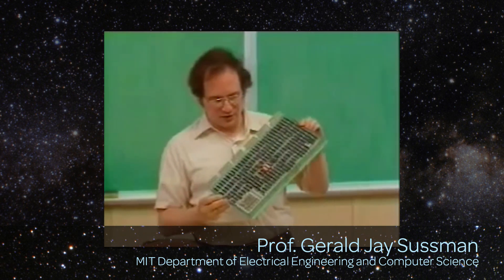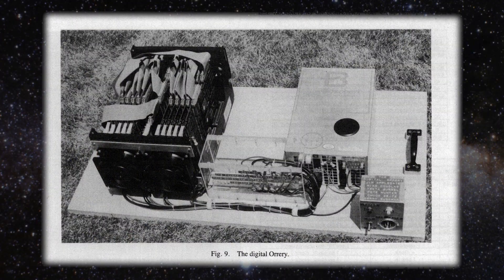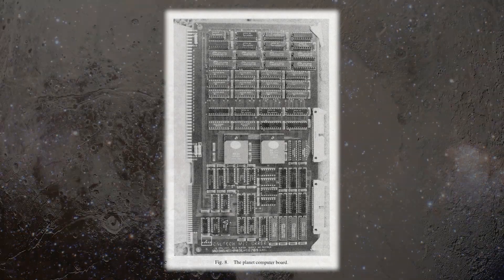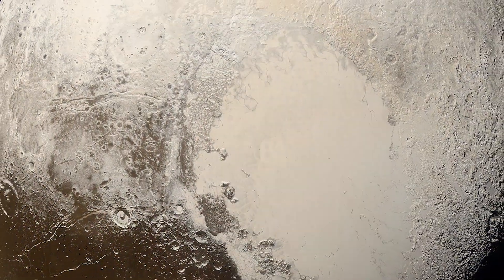Jerry Sussman is a computer scientist but also an amateur astronomer who builds hardware. He heard about my result concerning the motion of asteroids, and he said, if I don't believe your integrator, I can build you a computer to do the same calculation. So he built this computer — the Digital Orrery — and then we used that, collaborating together to study the motion of Pluto.